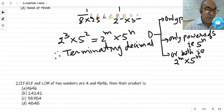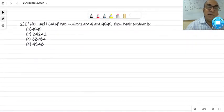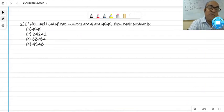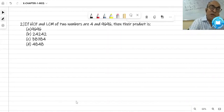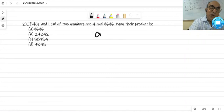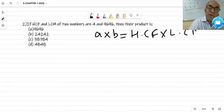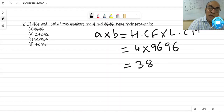Now we will move to the second question. If HCF and LCM of 2 numbers are 4 and 9696, then their product is. We know the relation between HCF and LCM of numbers. If 2 numbers are A and B, then A into B equals HCF into LCM. So, HCF is 4 and LCM is 9696, if you multiply it, it will be 38784. This is the answer.